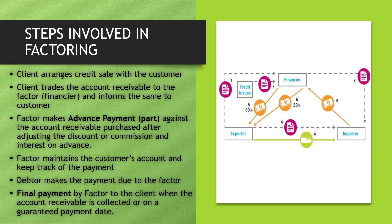Step three — the factor makes an advance payment against the receivable purchased after adjusting the discount, commission, or interest on the advance. The factor pays around 80% to the client and the remaining 20% after getting payment from the customer. Step four — the factor maintains the customer's account and follows up on payment. Step five — the debtor makes the payment due to the factor. Finally, step six — the final payment by the factor is made to the client when the account receivable is collected or on a guaranteed payment date.